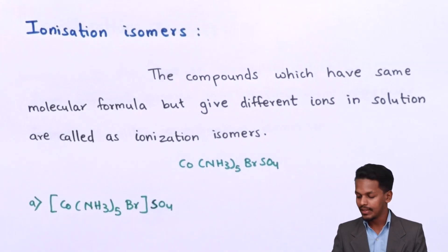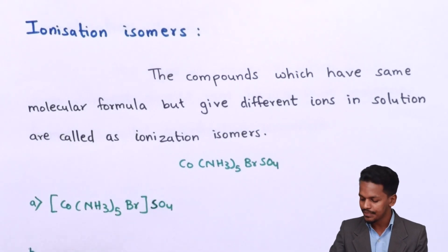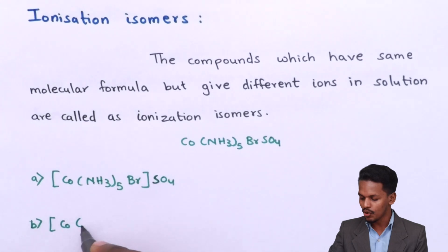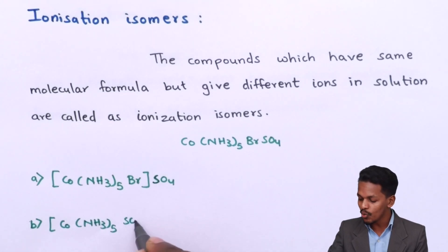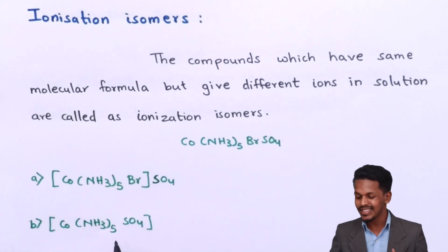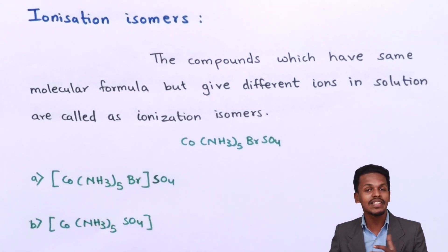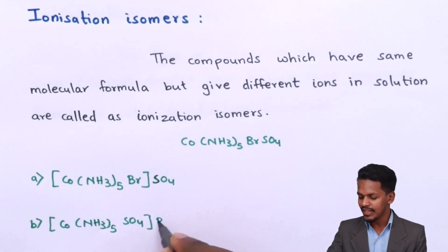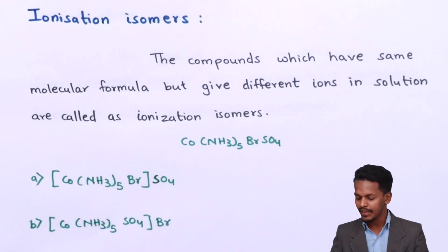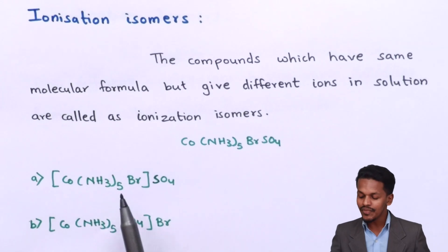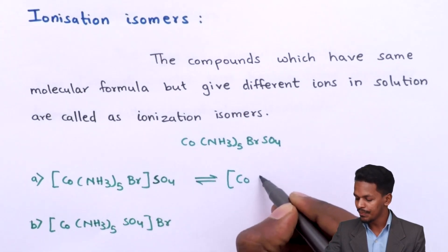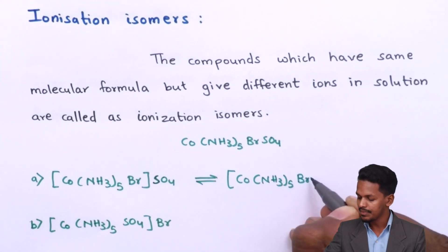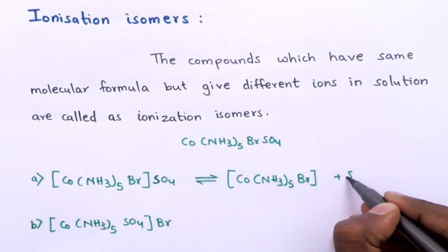The second possibility is that cobalt is the central metal atom surrounded by NH₃ molecules, with SO₄ in the secondary sphere and Br in the primary sphere. These two complexes have the same molecular formula, but the difference is in the ions they produce. If the first compound ionizes, it produces [Co(NH₃)₅Br]²⁺ and SO₄²⁻.